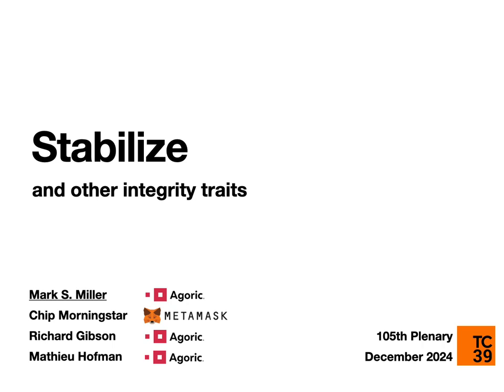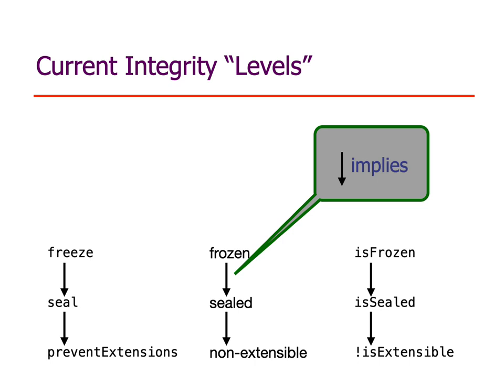I'm proposing stabilize and other integrity traits. As background, we have an existing set of integrity levels in JavaScript: frozen, sealed, and non-extensible, where the arrow on this diagram represents "implies." If an object is frozen, then it's sealed. If an object is sealed, then it's non-extensible. So going up the chart, we have stronger integrity levels.